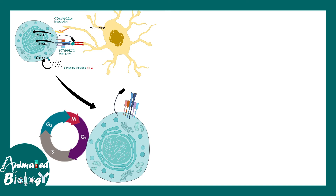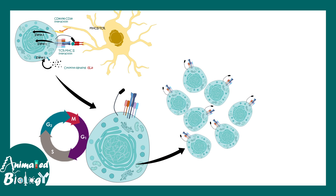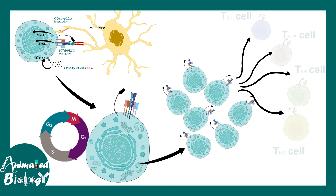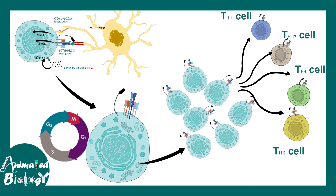Once T-cells are activated, they enter the cell cycle, proliferate, and eventually differentiate into different T helper cell subgroups such as TH1, TH2, TH17, or memory T-cells.